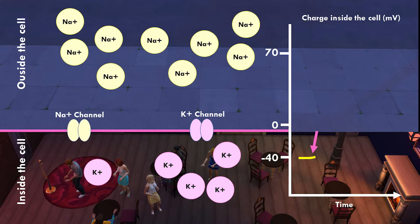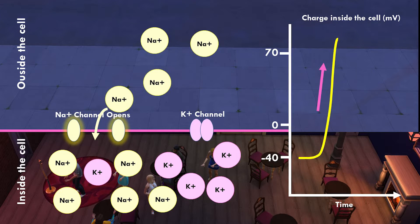A bouncer named 'sodium channel' is hanging out at the door, and when he gets the signal he opens up the rope and sodium ions start pushing through. The signal is a small change in the potential from the other parts of the cell — in other words, it is a voltage-gated ion channel.